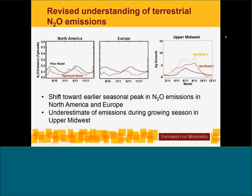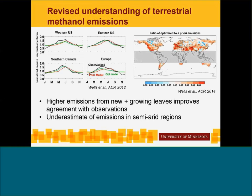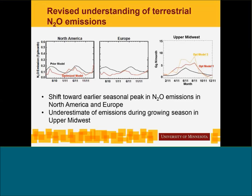It definitely seems like the direct and indirect agricultural emissions over the central U.S. are not well characterized by IPCC. We use inventories that apply IPCC emission scaling factors, but those are not properly capturing emissions in the upper Midwest. We're looking at total emissions — both direct and indirect.